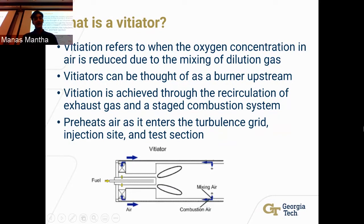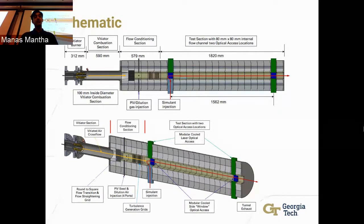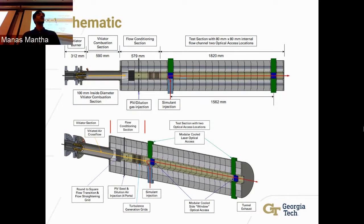This is just a schematic of the entire test rig — again, nothing has actually been built; it's a conceptual model. The vitiator, burner, and combustion section are upstream. Right after that is a flow conditioning section, which transitions the flow from circular (from the vitiator) to a square flow into the test section. After that are turbulence generation grids to create the turbulent environment. Then comes the simulant injection site, where we'll inject DIMP, air, argon, or carbon dioxide for our test.